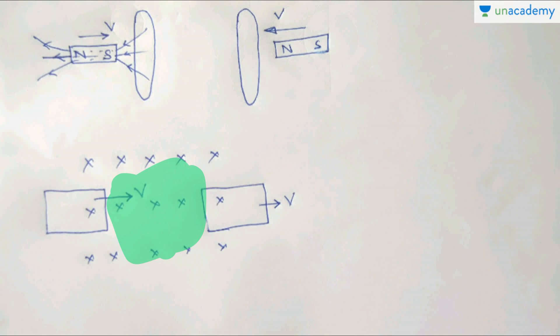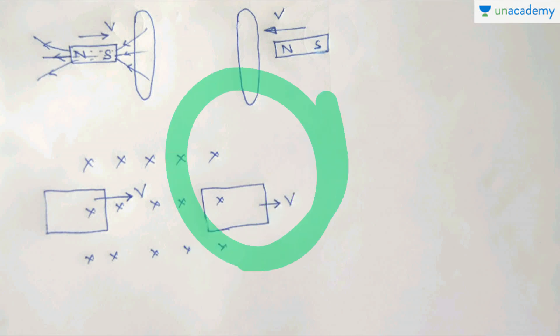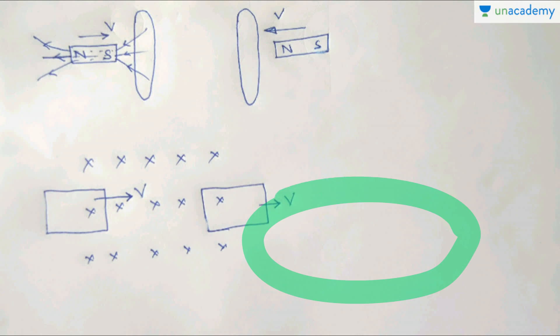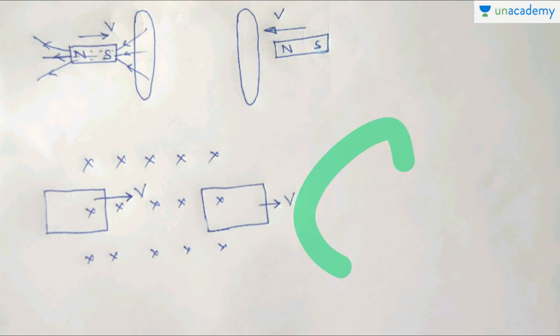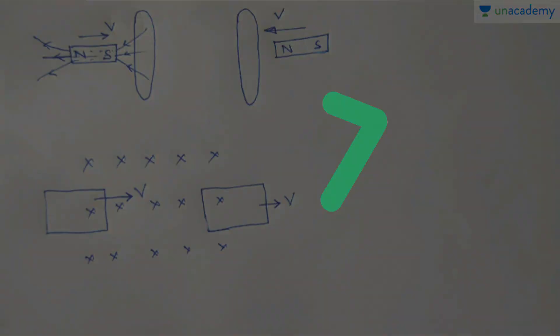I hope you understand the whole idea — by hook or crook, we have to change the magnetic flux through the loop wherever we want to produce a current. For example, if a magnet is falling down towards a loop, there will be a change in magnetic flux and there will be an electric current. That is the whole idea. If you like the lesson, please rate, review, and share. Thanks a lot.